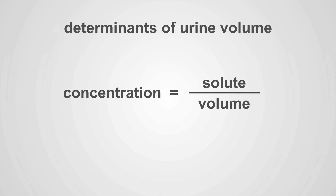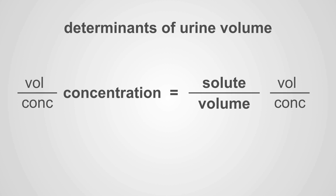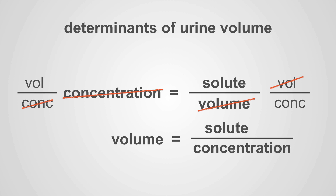To understand this, we'll start with the determinants of urine volume. We begin with the standard concentration formula: concentration equals solute over solvent. Using algebra to solve for urine volume, the formula becomes: volume equals the solute load divided by the concentration in the urine.